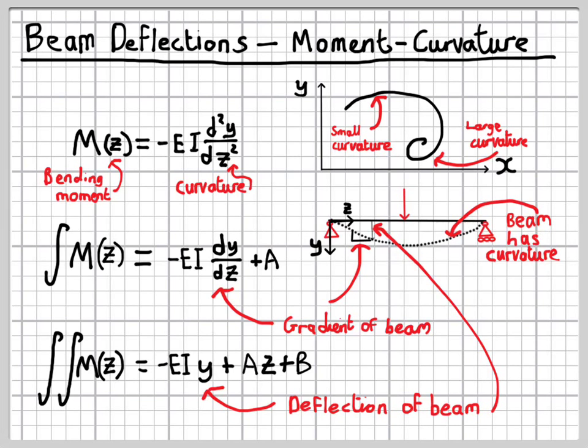There's two points to notice at this point. One is that we've got two unknowns in our expression, a and b. These are constants of integration, and we'll need to find out what those are. We'll come to that in a moment.